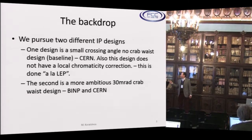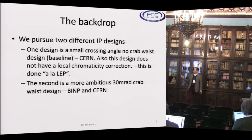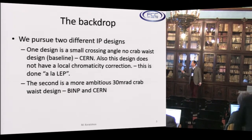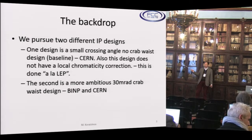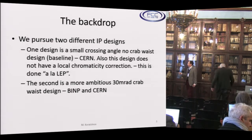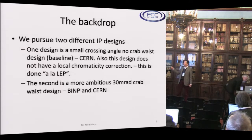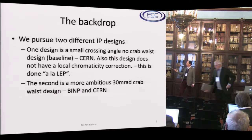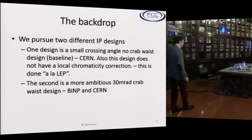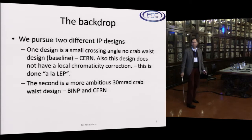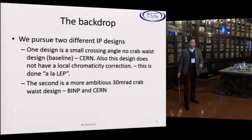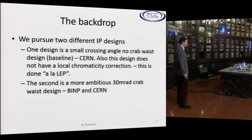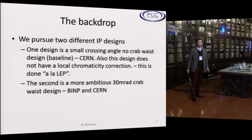I remind you that we have two different IP designs which we're pursuing at the same time. One design is a small crossing angle with no crab waist design — this is a baseline, a CERN design, and it uses the chromaticity correction a la LEP in the arcs. The second is a more ambitious 30-milli-rad crab waist design done by our colleagues at BINP, and CERN recently has put some effort into it as well. I think it's important to have two options at this stage.